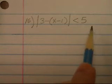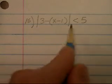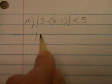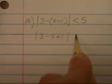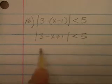We could set this up as an AND statement as it is written, but let's do some simplifying inside the absolute value symbol. Let's distribute that minus sign. This will be 3 minus x plus 1. The absolute value of that is less than 5.